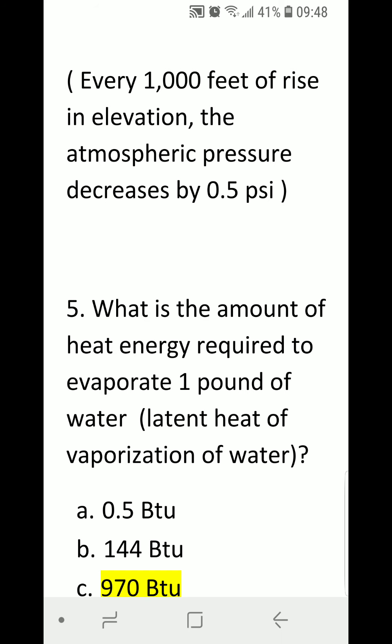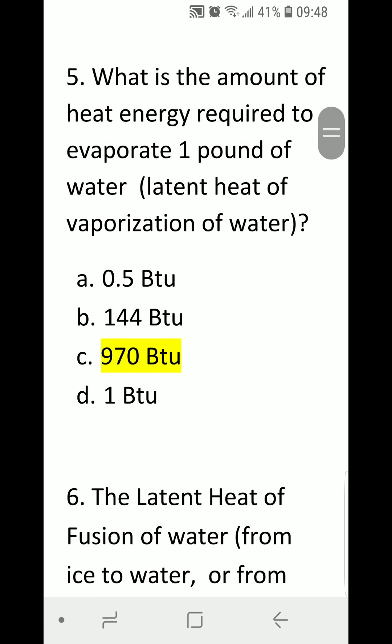Number five: What is the amount of heat energy required to evaporate 1 pound of water, the latent heat of vaporization? A) 0.5 BTU, B) 144 BTU, C) 970 BTU, or D) 1 BTU. The correct answer is C, 970 BTU. For every pound, you need 970 BTU of heat to evaporate or vaporize water.